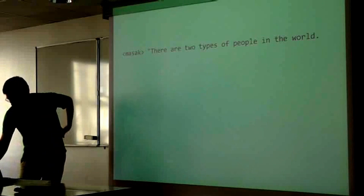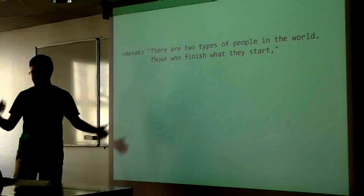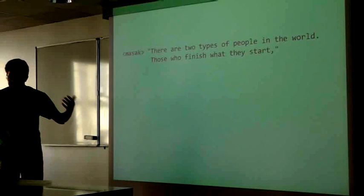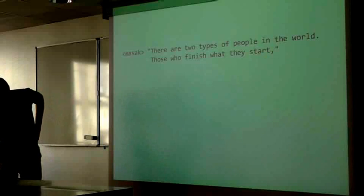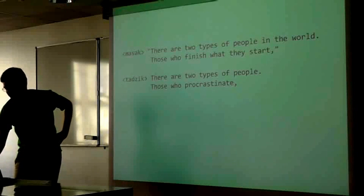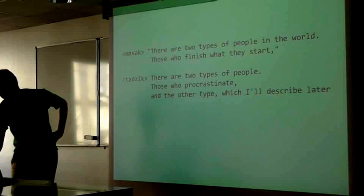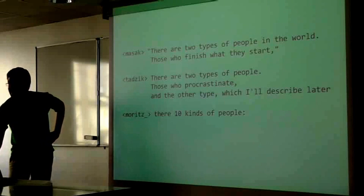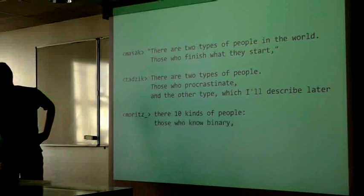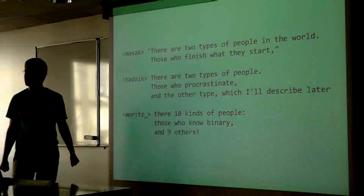There are two types of people in the world. Now we're into just trying to create these autopuns on the channel. Those who finish what they start. There are two types of people. Those who procrastinate, and the other type, which I'll describe later. There are ten kinds of people. Those who know binary and nine others.